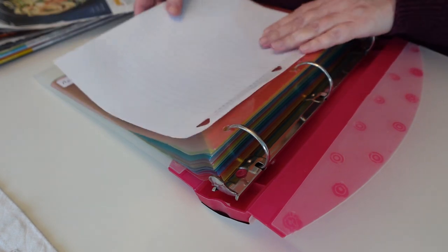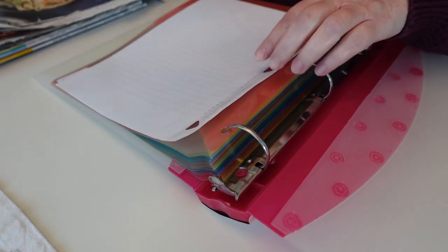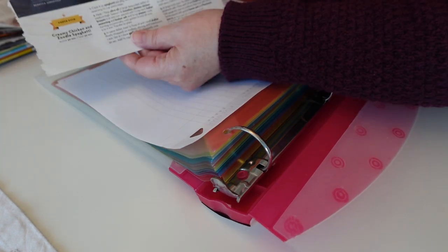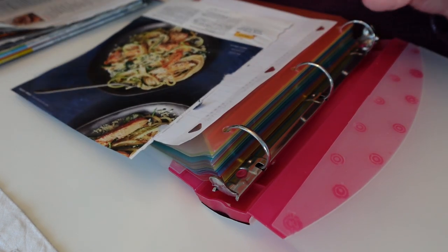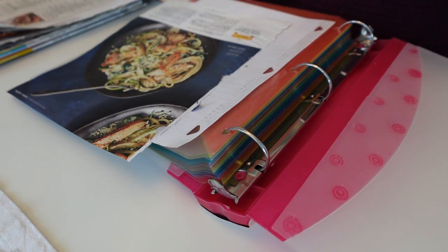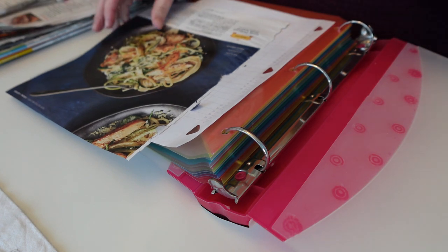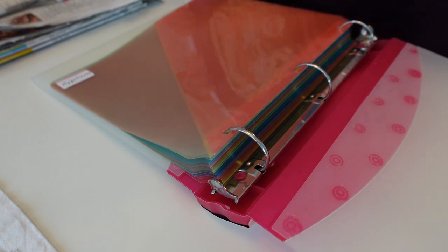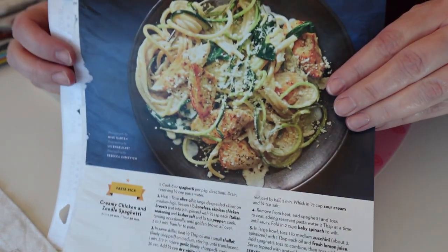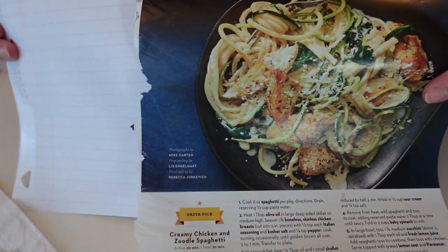So I've got my piece of paper. And my first recipe is a creamy chicken and zoodle spaghetti. I'm not going to show you each of these recipes. But I am going to show you my strategy. Because as you can see,